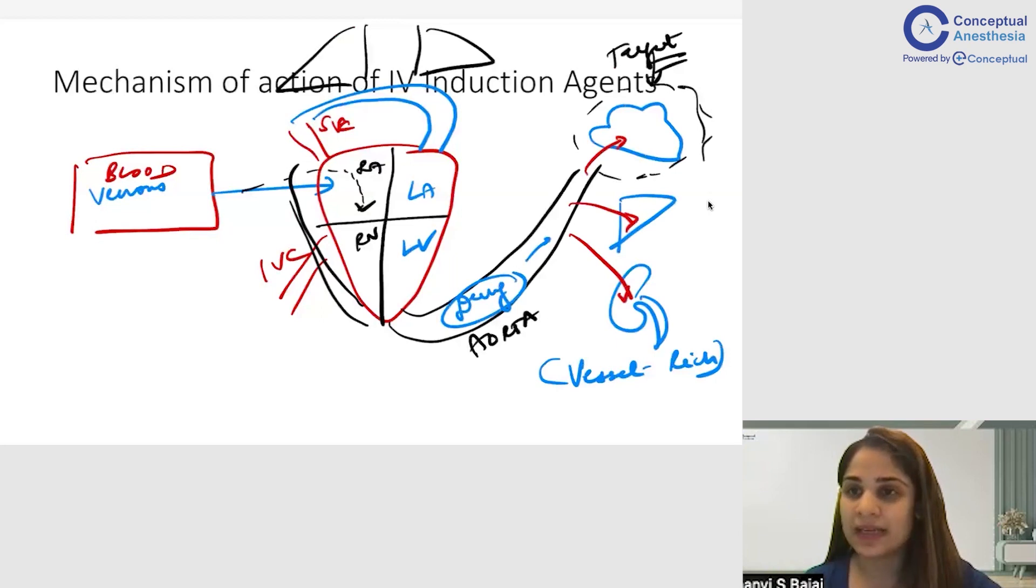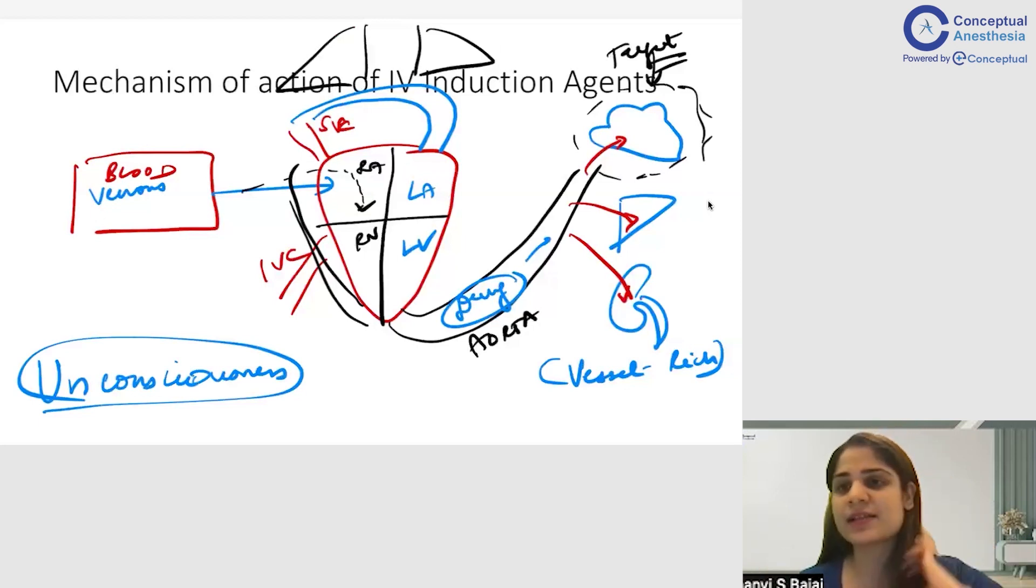Now where exactly in the brain that we will see ahead and how these IV anesthetic agents act. Once these IV anesthetic agents reach the brain, they produce my target action that is unconsciousness. You will give this answer, your teacher will be very impressed.